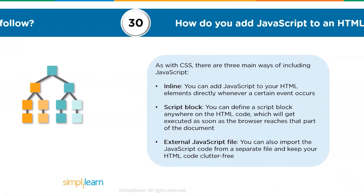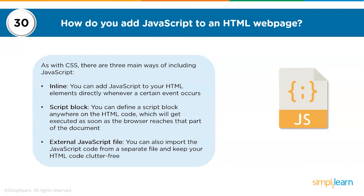The thirtieth question: how do you add JavaScript to an HTML web page? There are three methods: inline, script block, and external JavaScript file. Inline allows you to add JavaScript directly to HTML elements when a certain event occurs, using attributes of HTML tags that support it. A script block can be defined anywhere inside the HTML code and executes as soon as the browser reaches that part — this is why script blocks are usually added at the end of the HTML document. With an external JavaScript file, you import JavaScript code from a separate file, keeping your HTML code clutter-free, which is especially useful when there is a large amount of scripting.